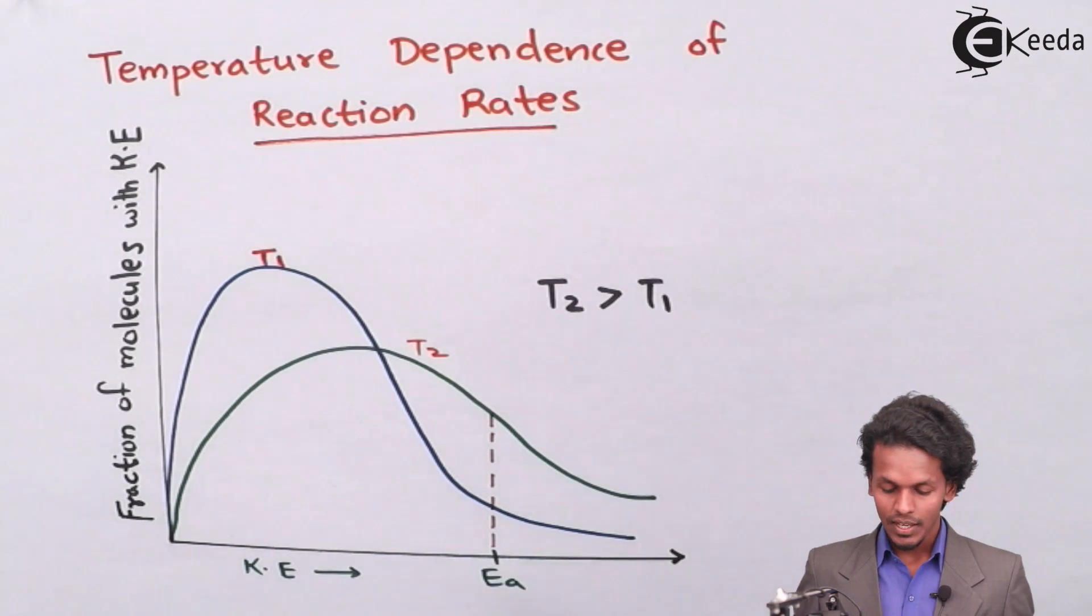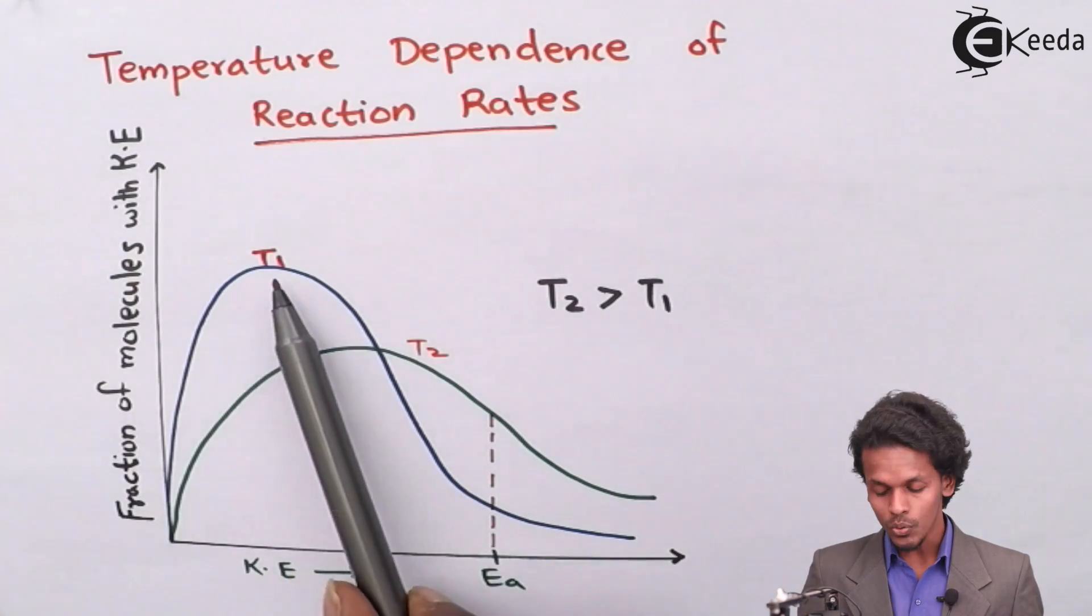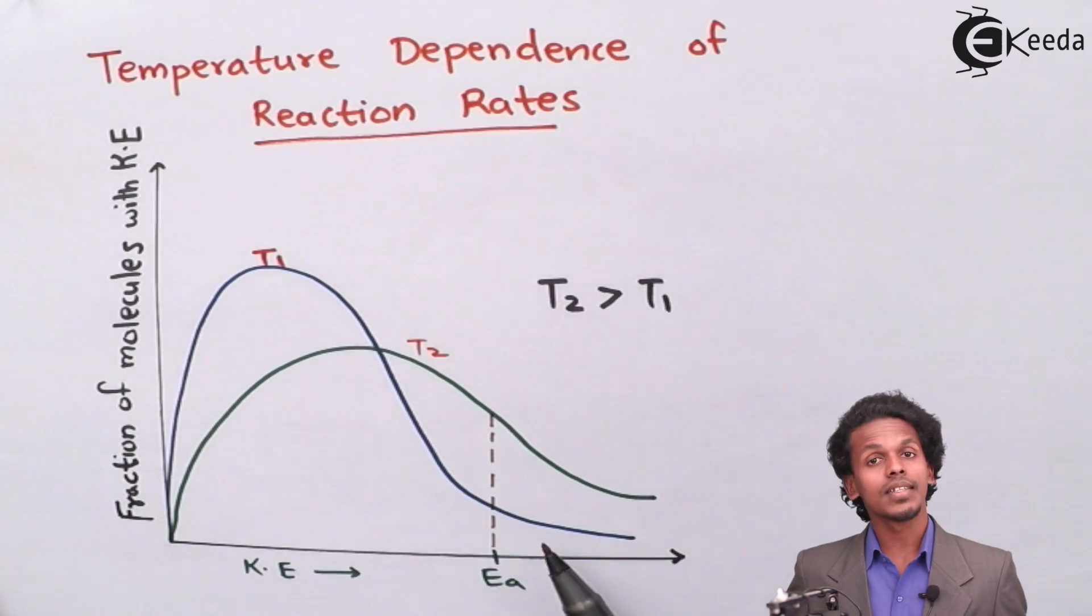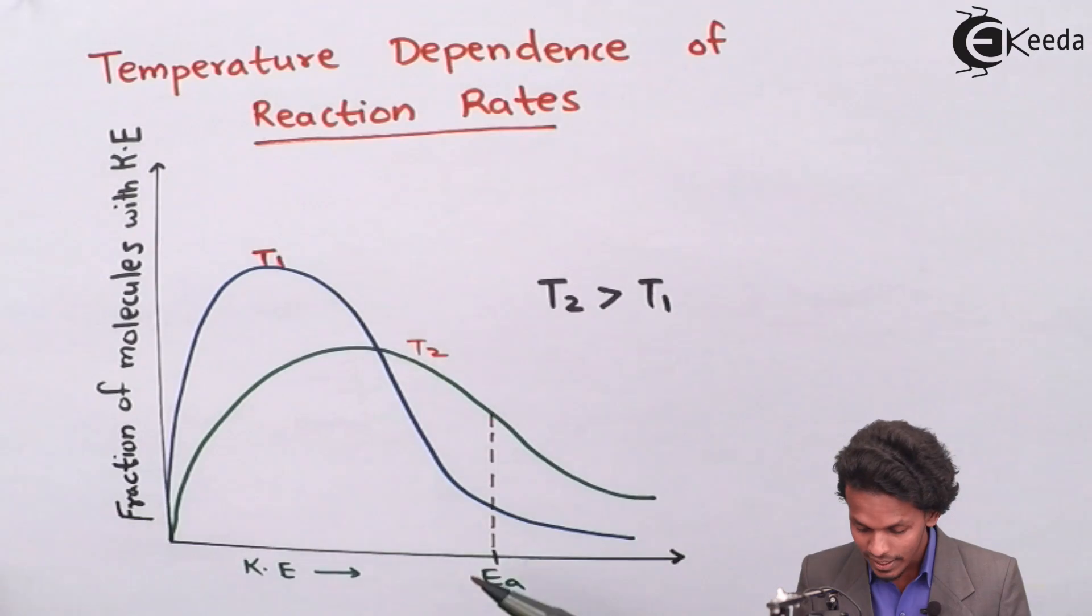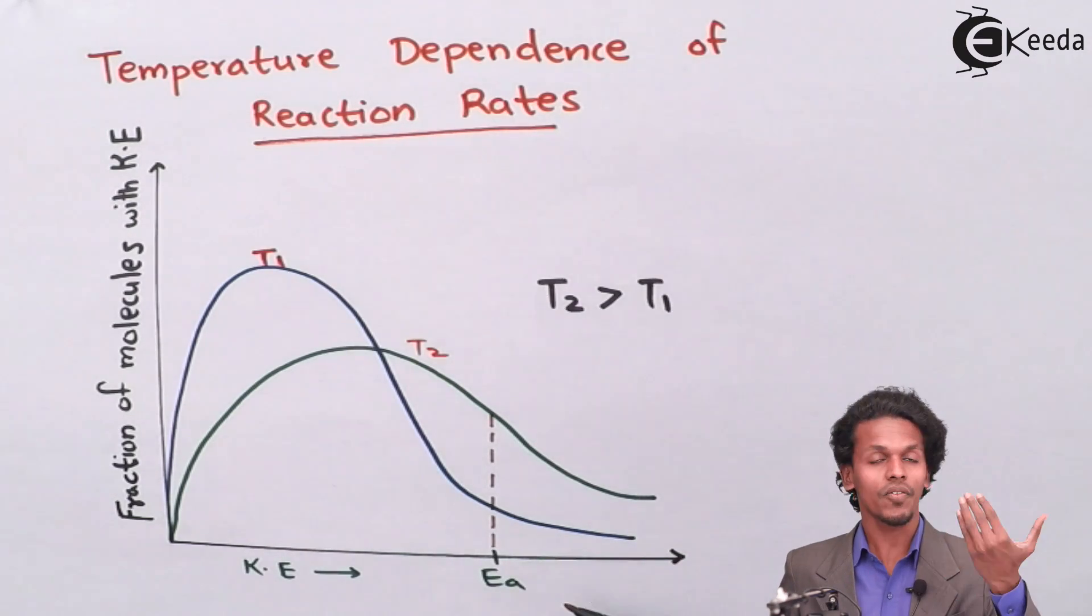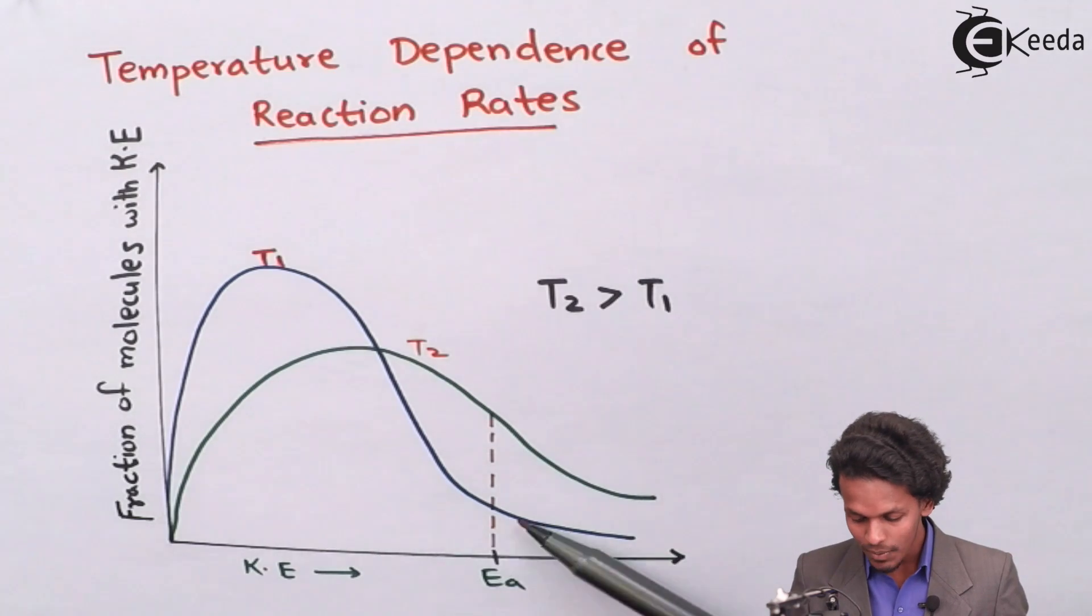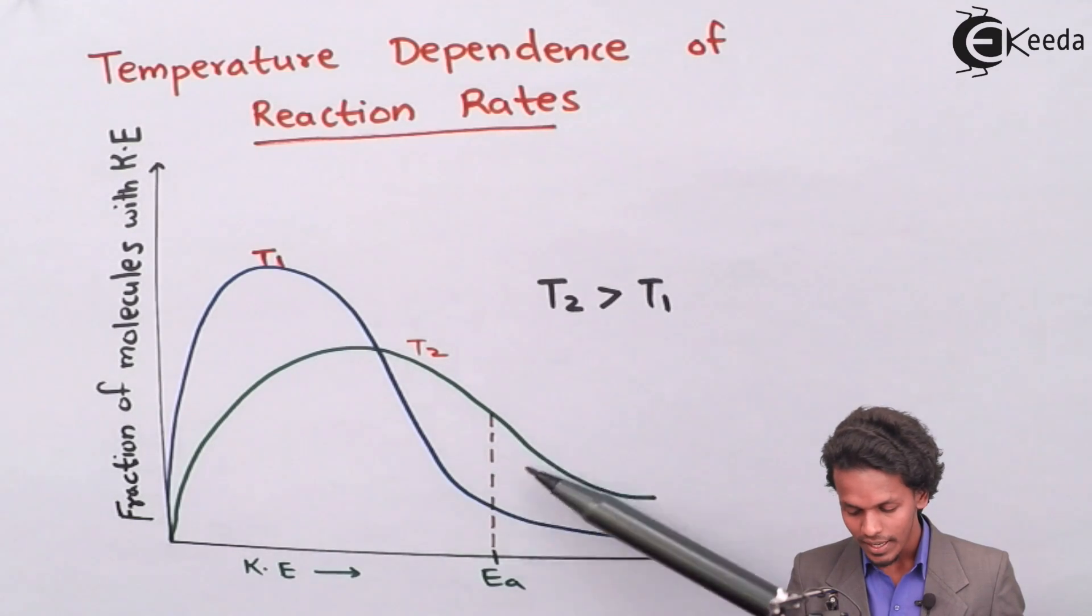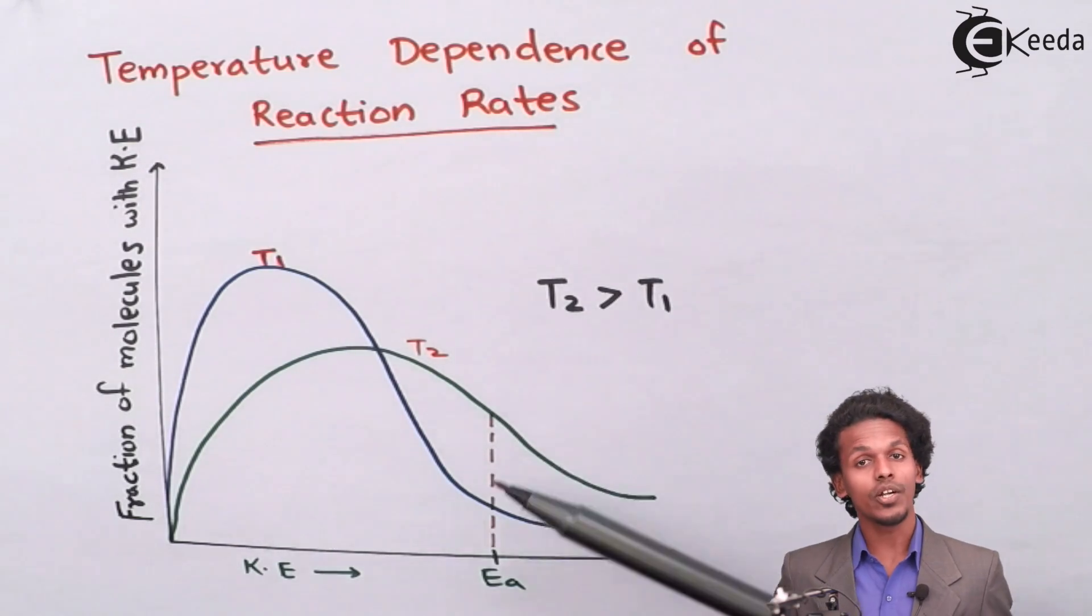When it comes to the temperature T2, it will give a product, that is for sure. But the thing is, the area which covers the energy of activation with the help of the temperature T1 is very much less compared to the area which is of T2.